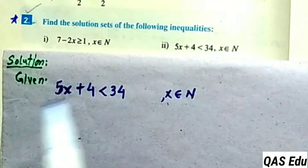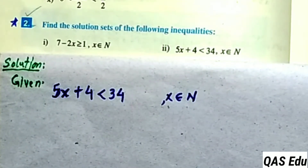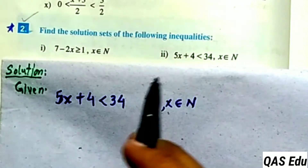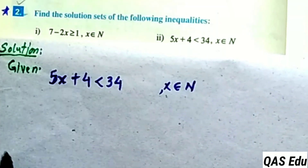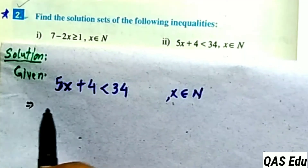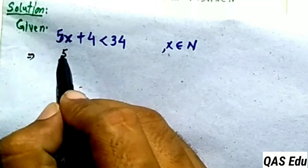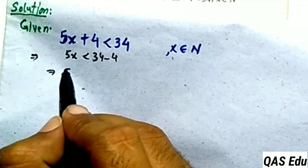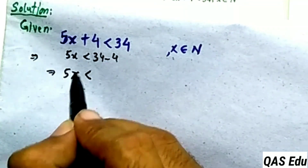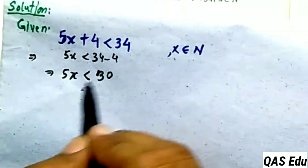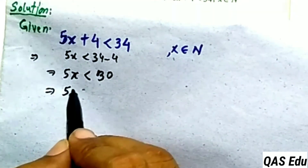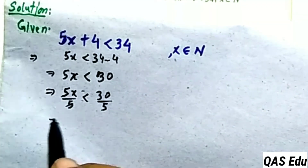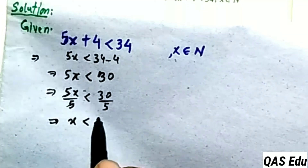Part 2: The linear inequality is 5x plus 4 is less than 34. We saw a similar restriction in Part 1. Moving 4 to the right side: 5x is less than 34 minus 4, which gives 30. Dividing both sides by 5, the 5s cancel and x is less than 6.